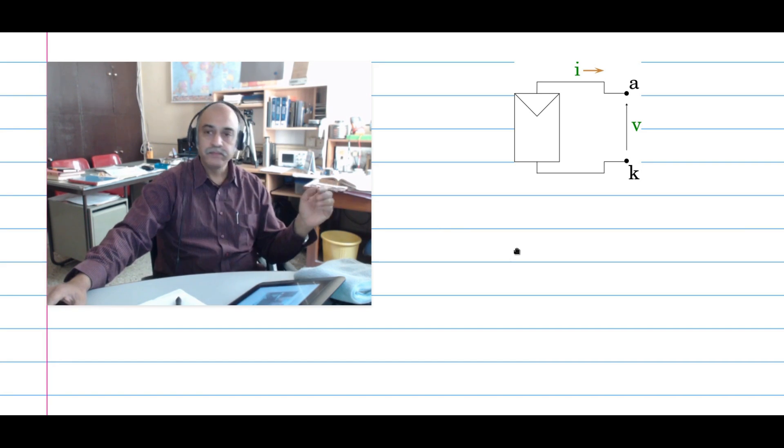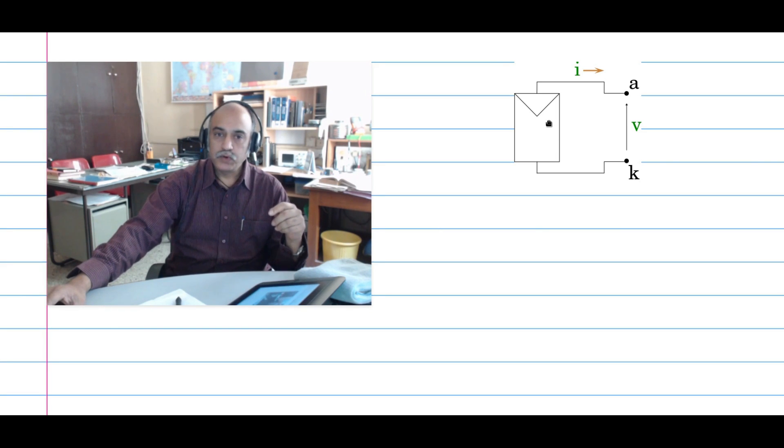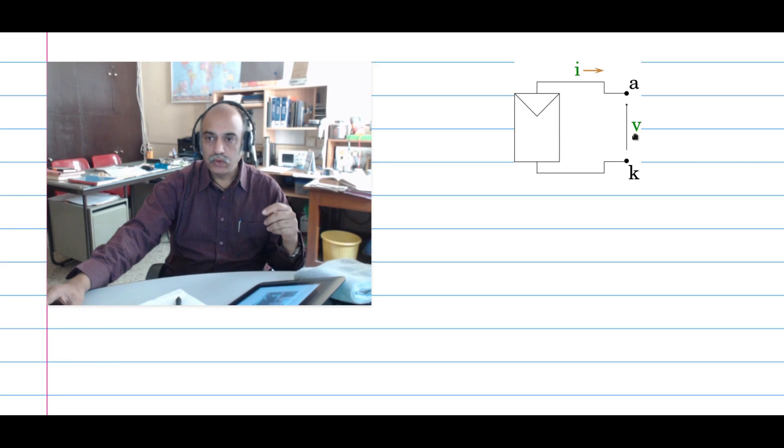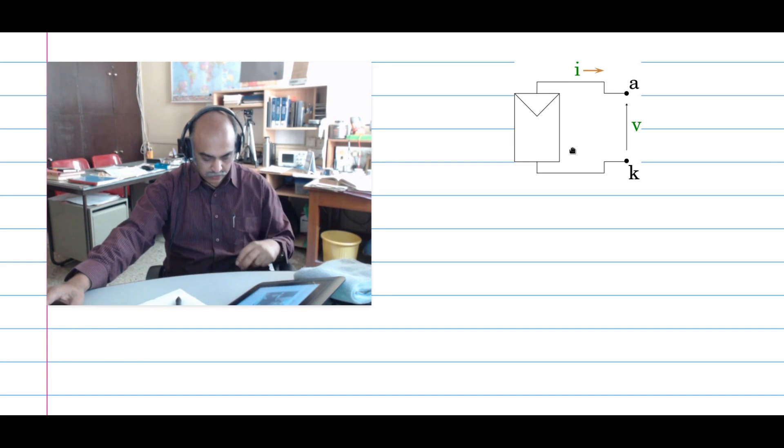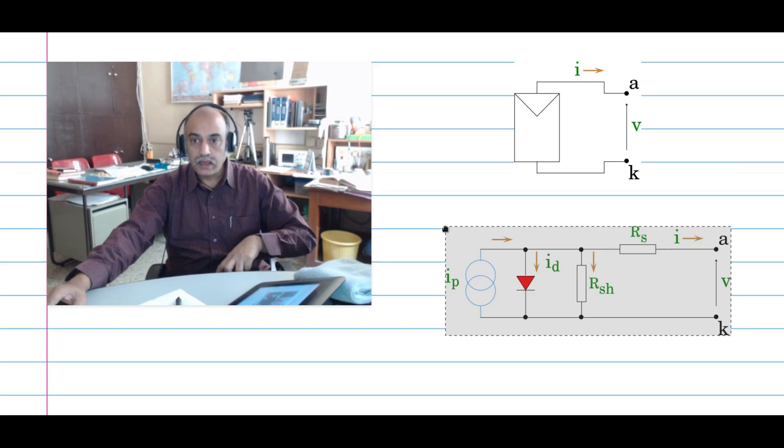We have here a photovoltaic cell, the symbol of a photovoltaic cell. The terminal voltage V and the terminal current I that is supposed to flow out of the terminal A here is indicated. We also know we have seen before the equivalent circuit model of this photovoltaic cell.